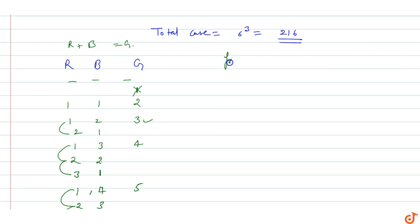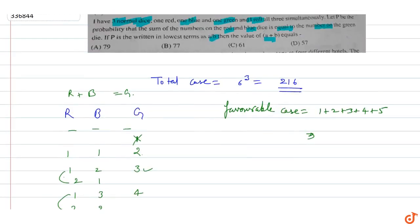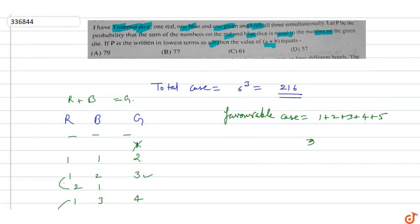The favorable cases are 1 + 2 + 3 + 4 + 5 = 15 out of 216 total cases where red plus blue equals green.